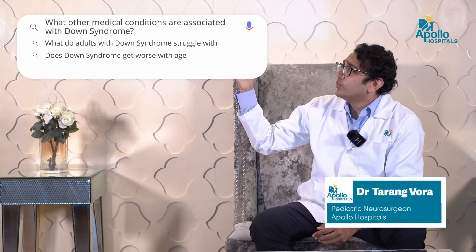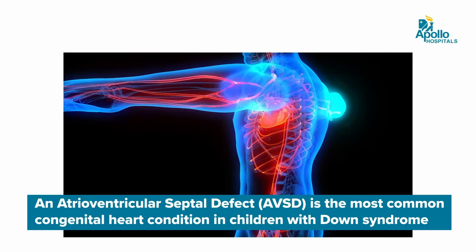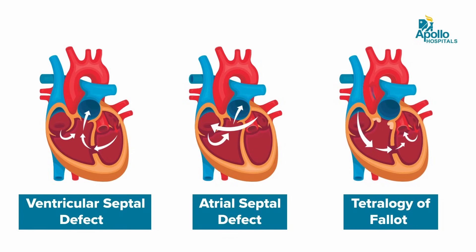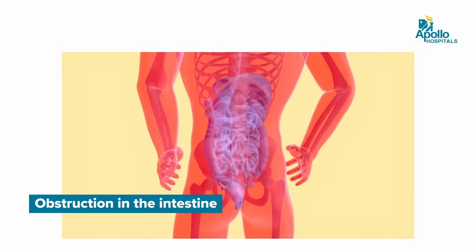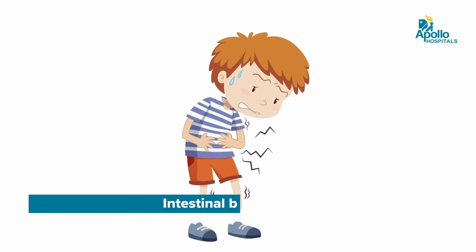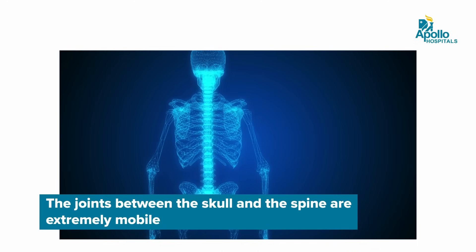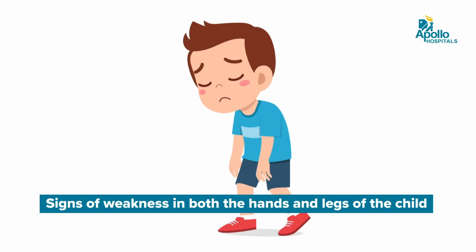What other medical conditions are associated with Down syndrome? There are a plethora of conditions associated with a child born with Down syndrome. The most likely association is between heart disease and Down syndrome — most of these children will have a defect or a hole in the heart, such as a ventricular septal defect, atrial septal defect, or tetralogy of Fallot, implying that the heart is not properly formed. The second likely association is obstruction in the intestine, such as gastroesophageal atresia, where the child may not be able to pass stools due to a narrow opening in the intestines. Third, the joints between the skull and the spine can be extremely mobile, which may cause weakness in both the hands and legs.